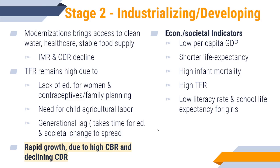Stage two is where the first and really the biggest change happens — this is where population growth occurs. The industrializing country starts to get access to things that slow the death rate: clean water, doctors and vaccines, more food, all of those things. However, the birth rate remains unchanged because there still aren't a lot of educational and job opportunities for women, and we get a generational lag. If everybody has been used to having six or seven children without them surviving, and all of a sudden those children start surviving, it takes time for that to sink in. So we have very high birth rates in stage two and a declining death rate, and those two things together lead to a natural increase in population size.